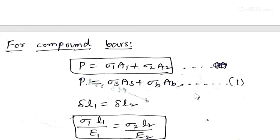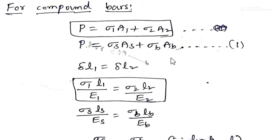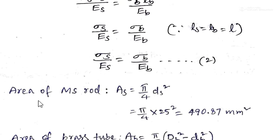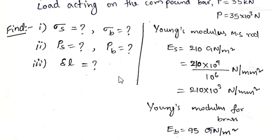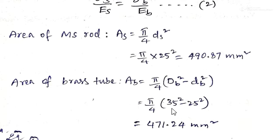To solve the equations, we first calculate the cross-sectional areas. Area of MS rod: A_S = (π/4)·D_S² = (π/4)·25² = 490.87 mm². Area of brass tube (hollow section): A_B = (π/4)·(D_B_outer² − D_B_inner²) = (π/4)·(35² − 25²) = 471.24 mm².